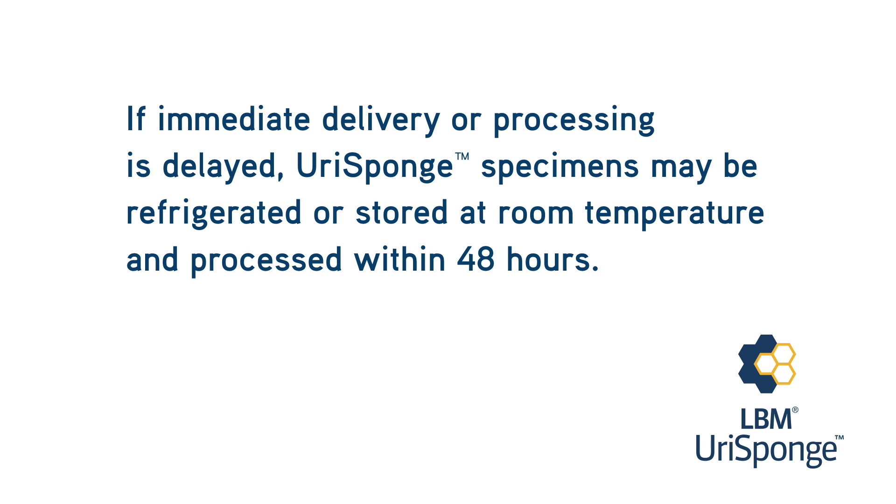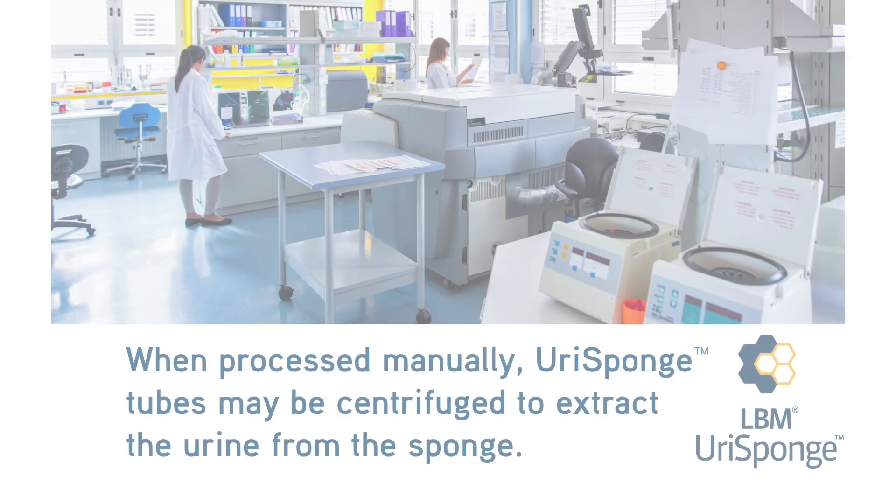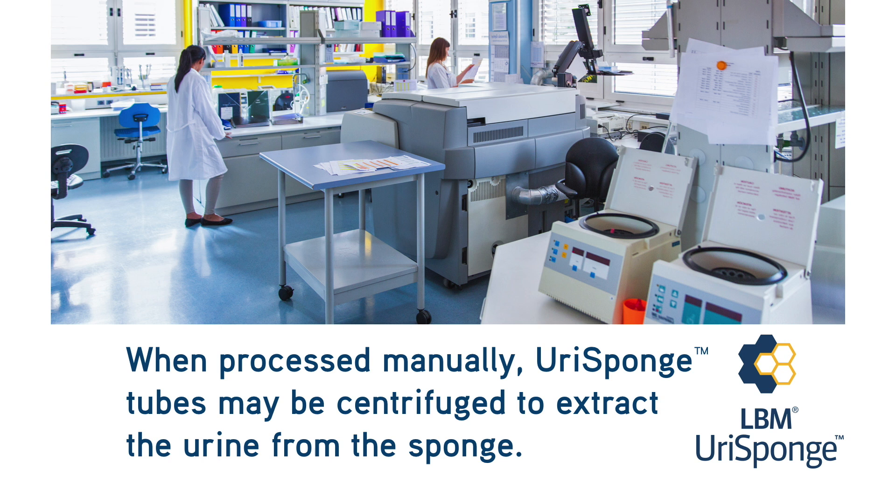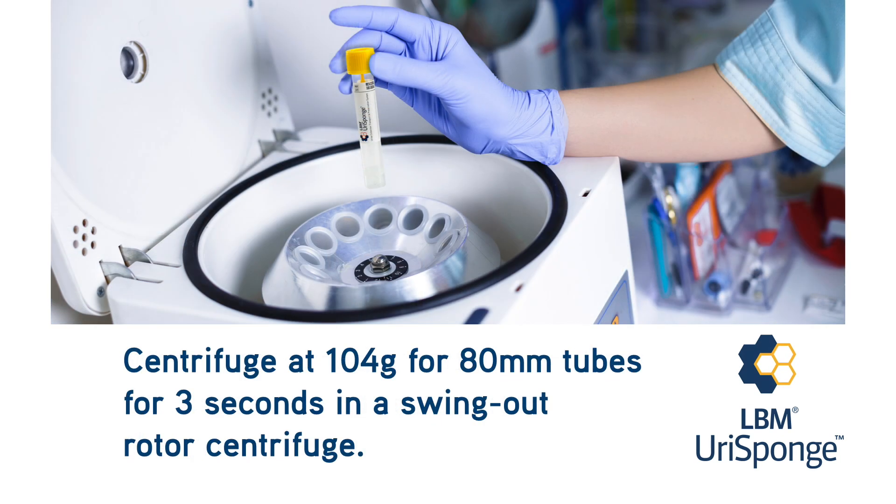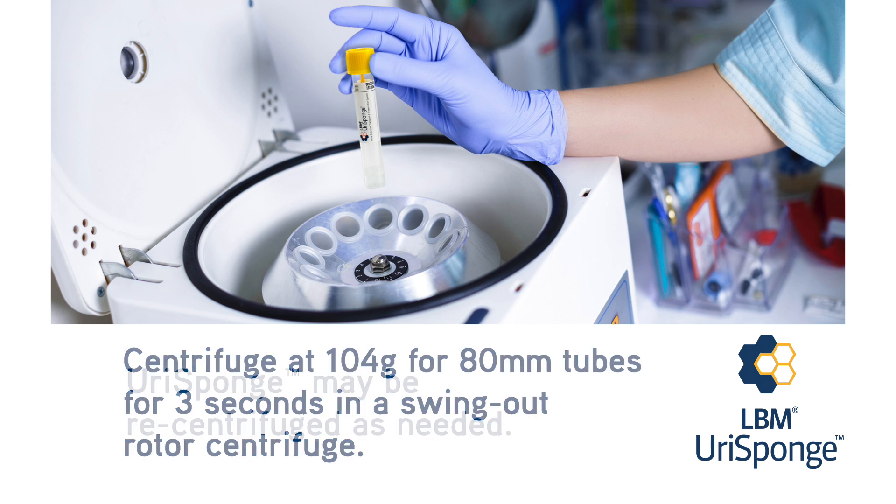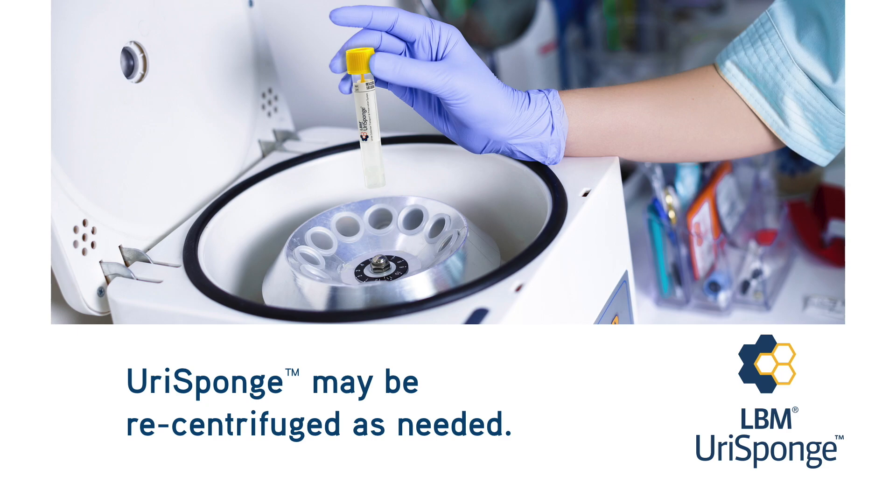When processed manually, UriSponge tubes may be centrifuged to extract the urine from the sponge. Centrifuge at 104 grams for 80 millimeter tubes. UriSponge may be re-centrifuged as needed.